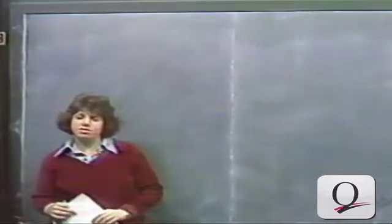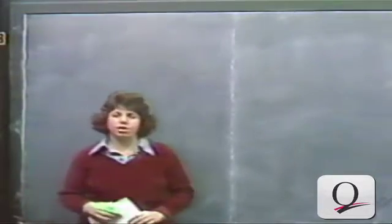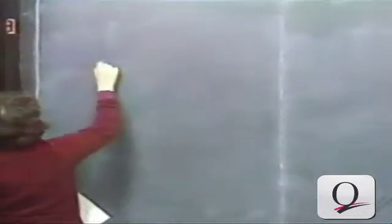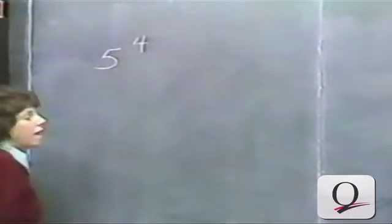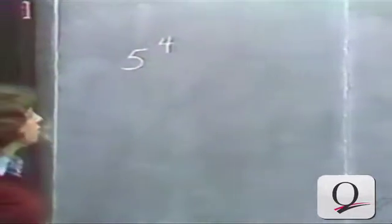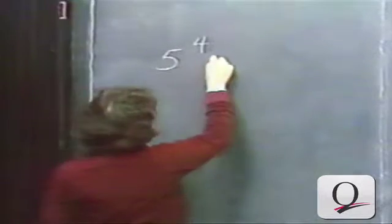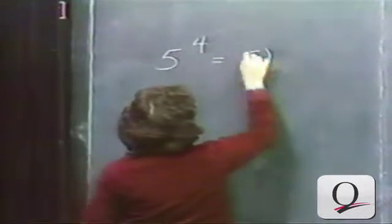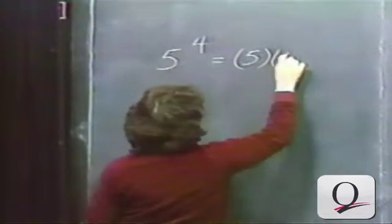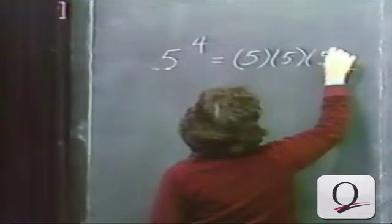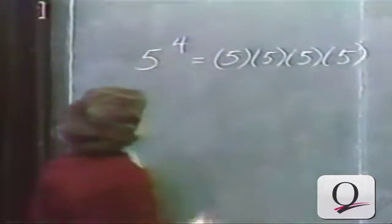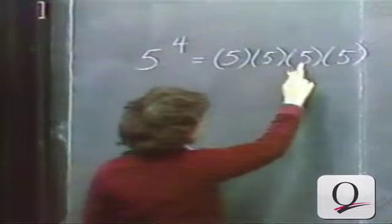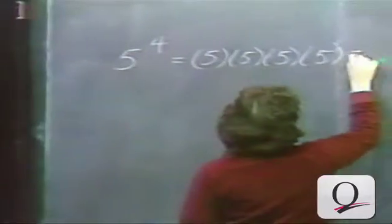So far, we've only been considering natural number exponents. For example, 5 to the fourth power. Here, 5 is the base and 4 is the power or the exponent. 5 to the fourth power means 5 written as a factor 4 times: 5 times 5 times 5 times 5, which is 625.